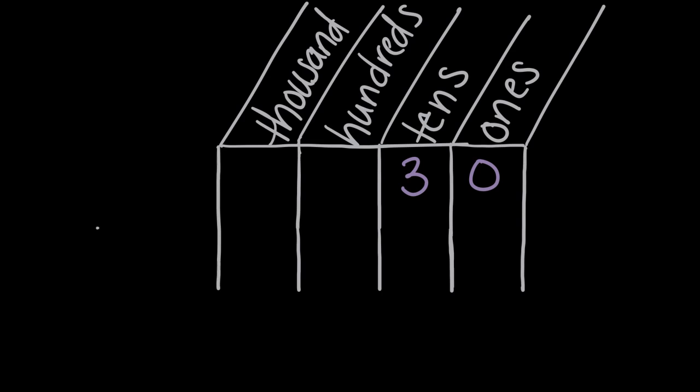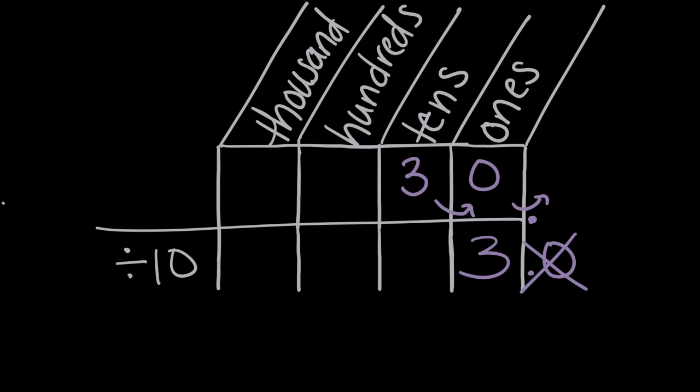And when we divided 30 by 10, remember what happened to the three. Instead of being three tens, our solution was three ones. The three moved one place value to the right. And the zero really did too. It would move after a decimal, which would be 3.0, which is the same as three, which is the reason we didn't need to write that zero, the reason that we could cross it off. So our number, instead of being three tens, when we divided by 10 became three ones.